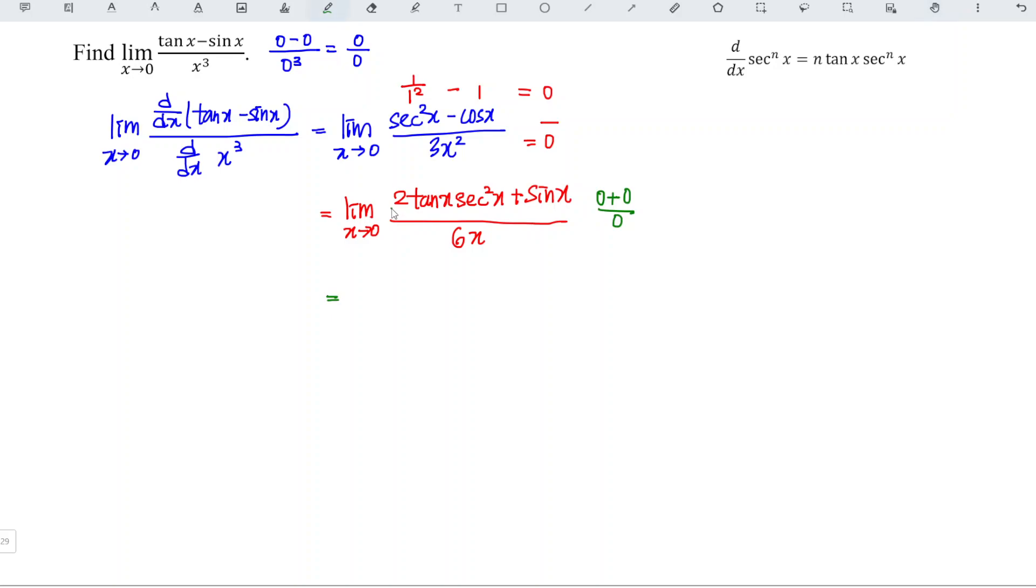Unfortunately, this time we have a product, so we have to apply the product rule. Let's say we let u be 2tan(x) and v be sec²(x). Recall that when we have the function uv and differentiate with respect to x, we should obtain u(dv/dx) + v(du/dx).